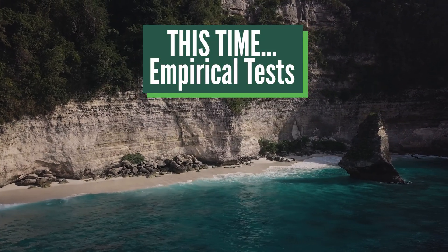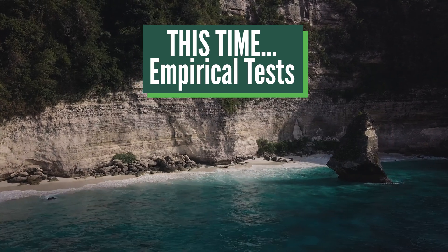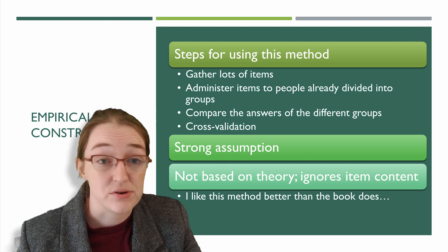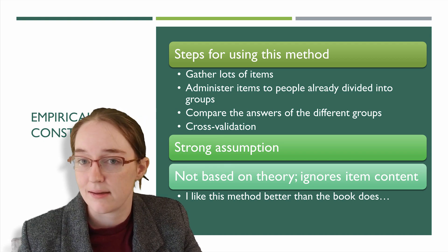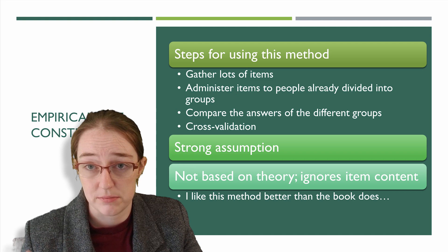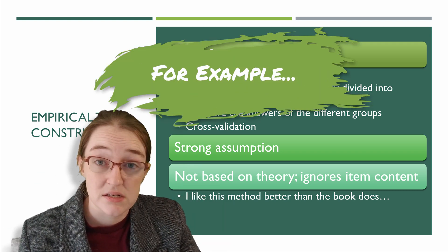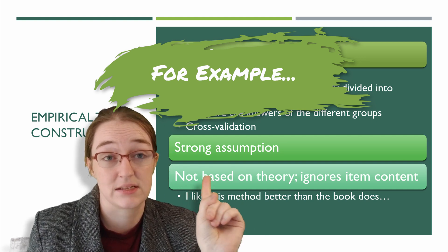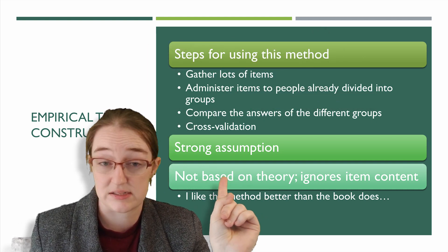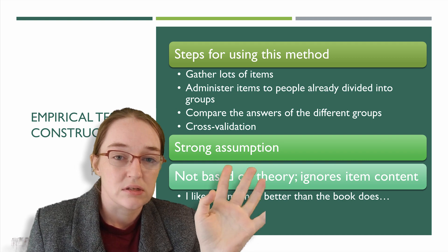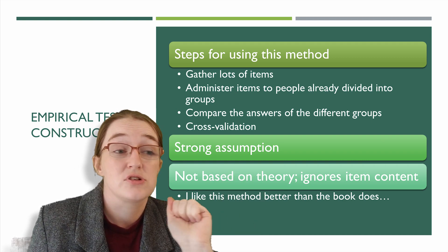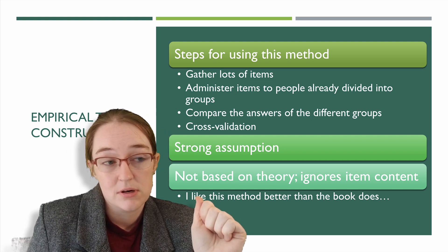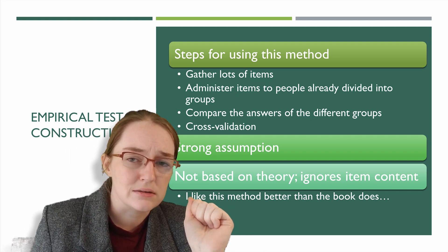Empirical test construction is the last method. You generate tons of questions — they don't have to be related to what you're trying to measure. The MMPI, the Minnesota Multiphasic Personality Inventory, uses this technique. It is the classic example of empirical test construction. What you do is gather tons of questions and administer them to people who are already divided into groups.